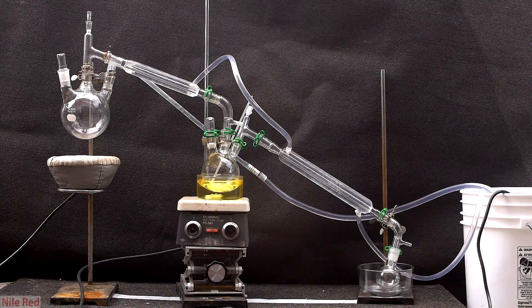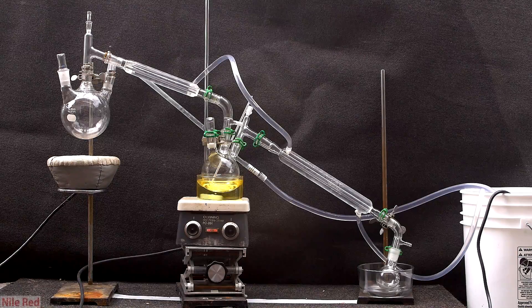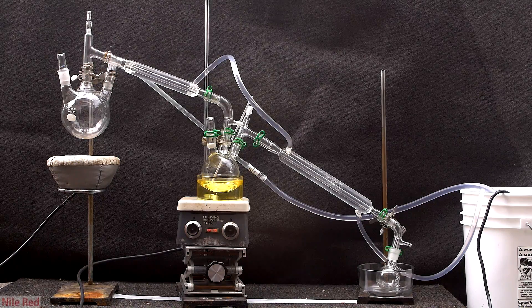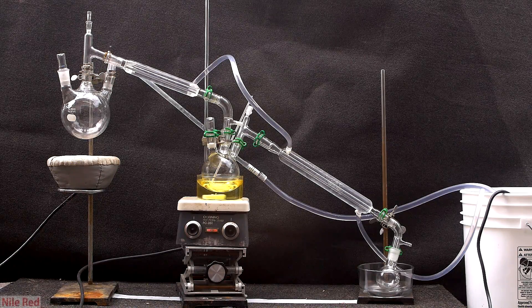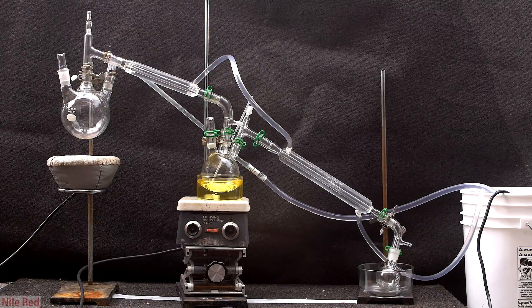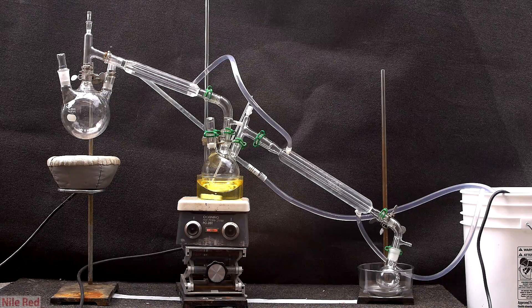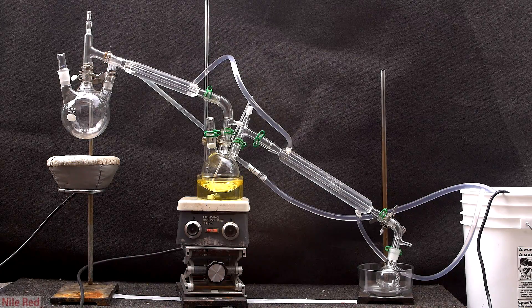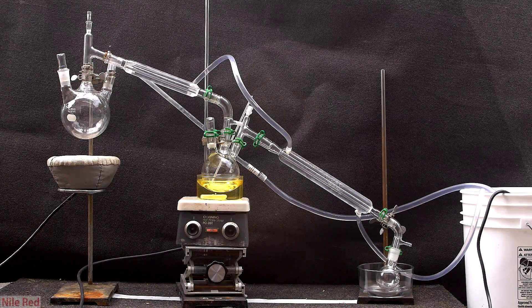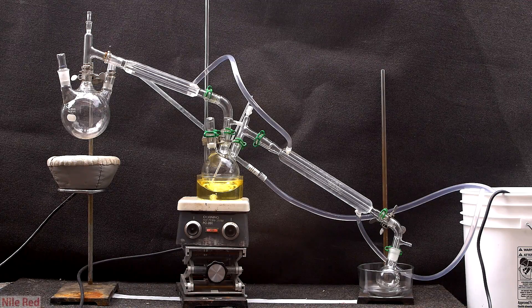This is what the entire apparatus looked like, and you can see that it's a little bit complicated. On the far left, we have our flask where the reaction is going to take place. In the middle, we have a flask with some regular salt in it with an oil bath underneath, and on the far right, we have our receiving flask. As we continue with the preparation, you'll see why the middle flask was really necessary.